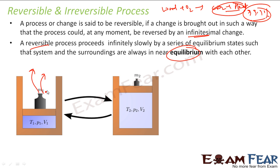For example, remove one gram of iron at a time — the gas expands a little and reaches equilibrium. Then add one gram at a time to compress it back. Every step is in equilibrium. This is a reversible process. The key condition is: it must be done very slowly, and at each step the system must be in equilibrium with the surroundings. Removing all the mass at once is not a reversible process.